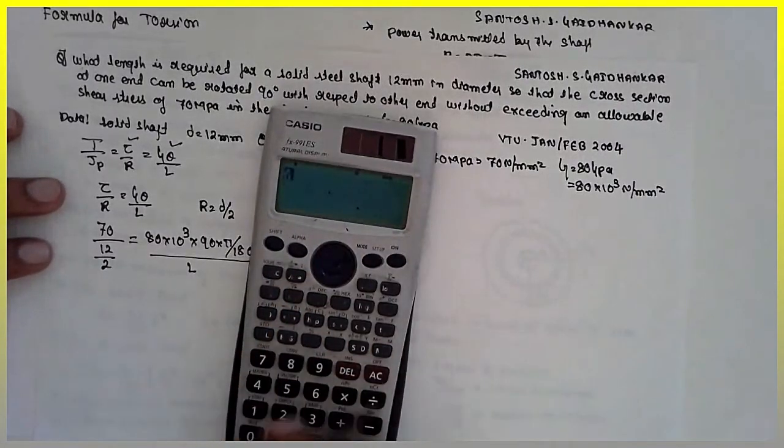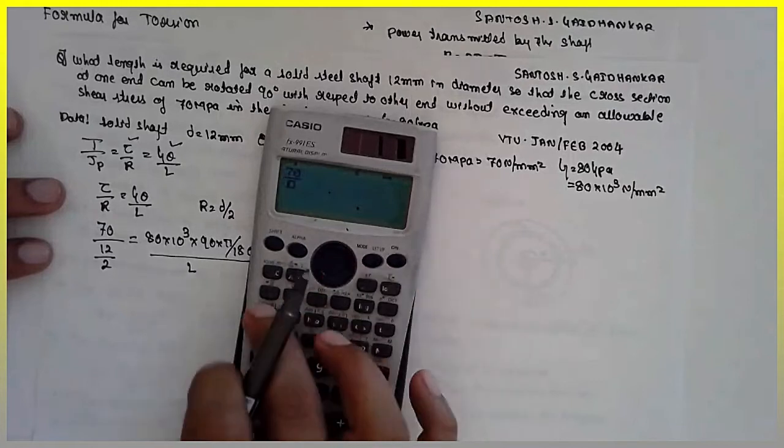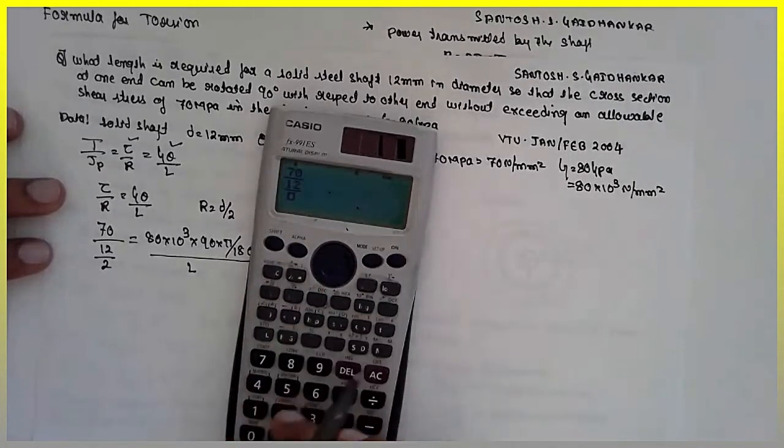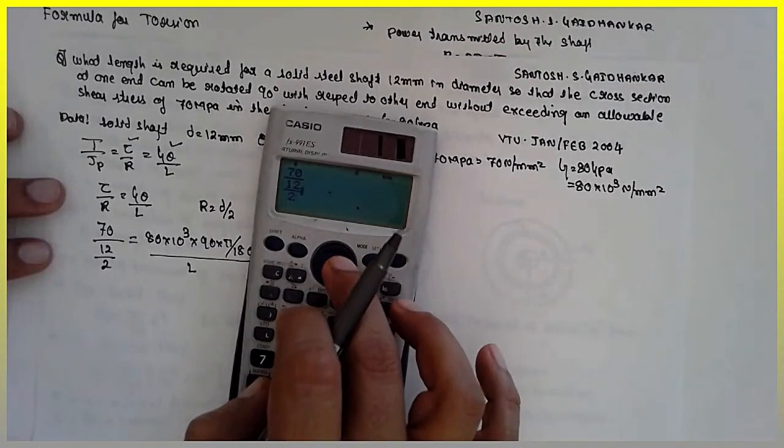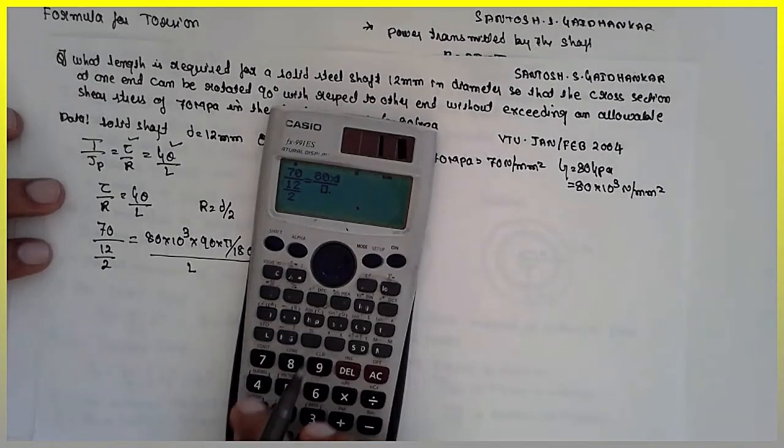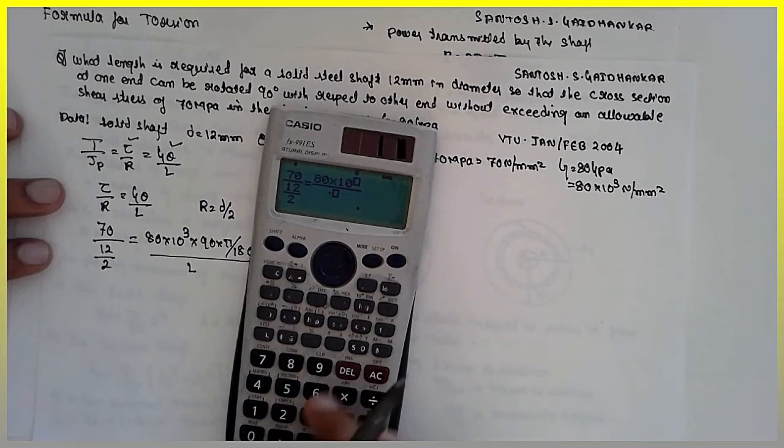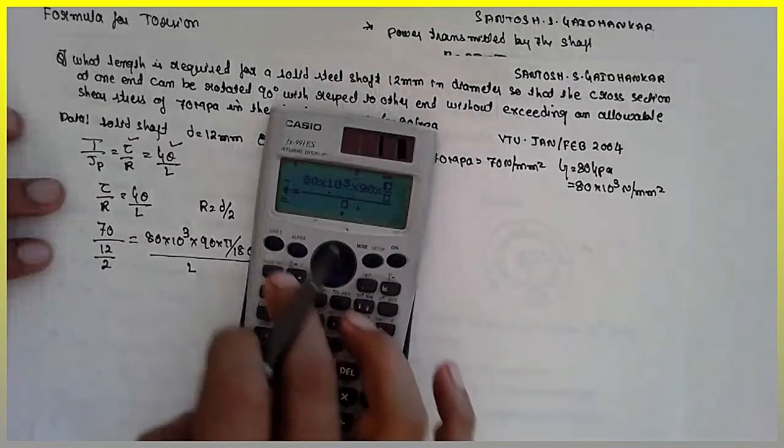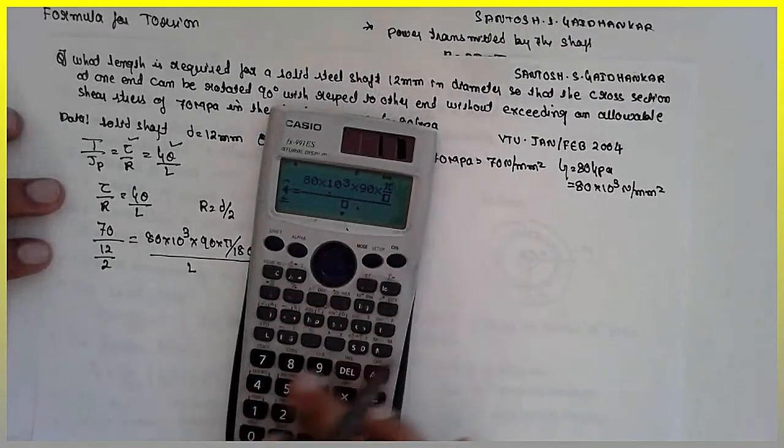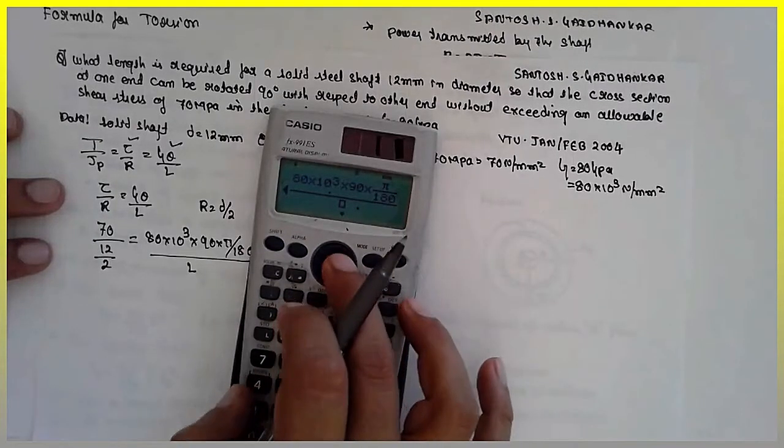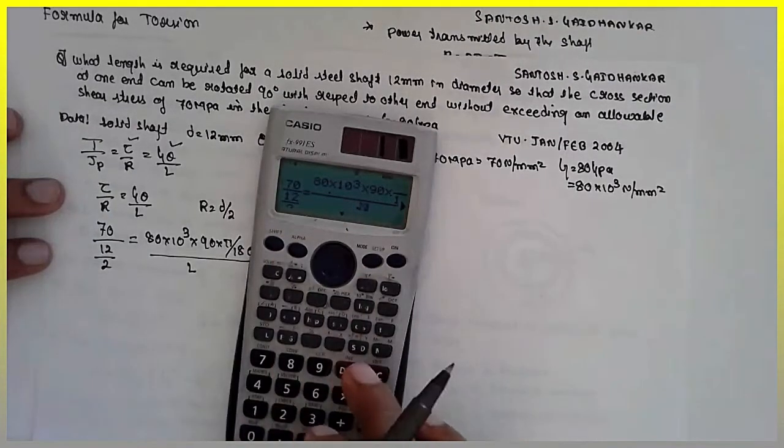With the help of calculator we can solve it. 70, 12 divided by 2 is equal to 80 into 10 raised to 3, into 90 into pi divided by 180 divided by x.